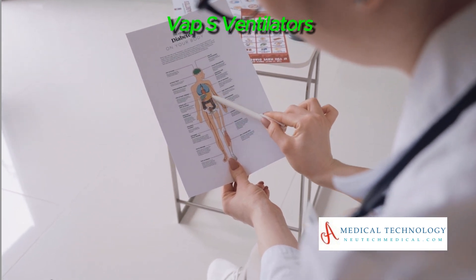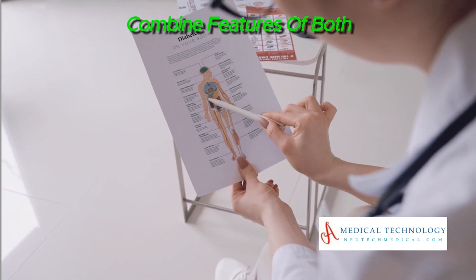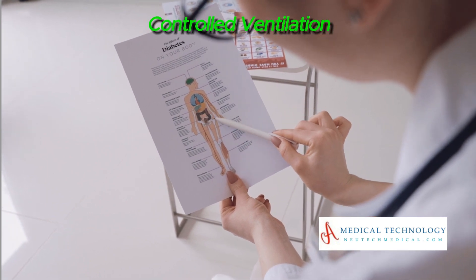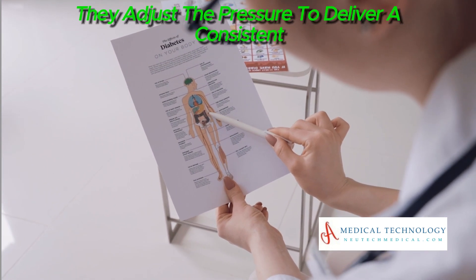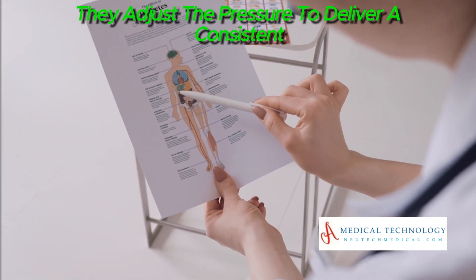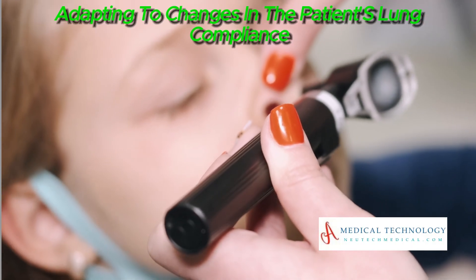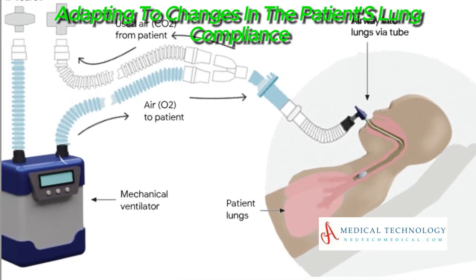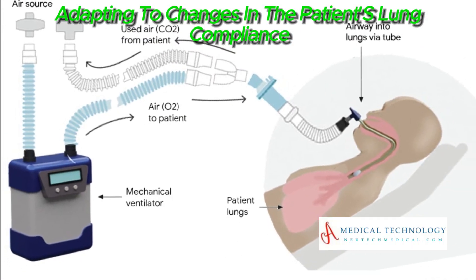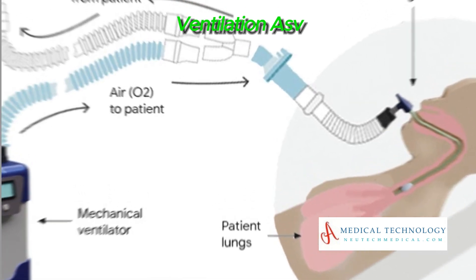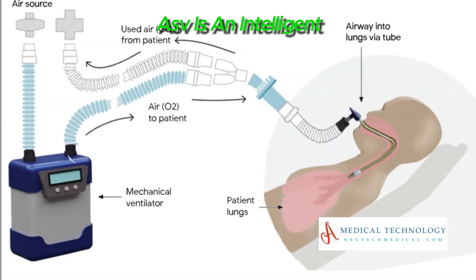Volume assured pressure support (VAPS) ventilators combine features of both volume controlled and pressure controlled ventilation. They adjust the pressure to deliver a consistent tidal volume, adapting to changes in the patient's lung compliance.